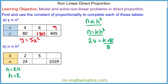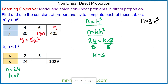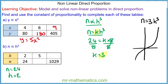We can divide both sides by 8, so k will equal 3. So our model is n is equal to 3h cubed. I have substituted this value of k into the equation. Graphically, we can model this as a cubic graph with the equation n is equal to 3h cubed, with h values on the horizontal axis and n values on the vertical axis.